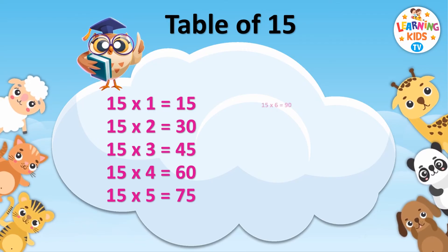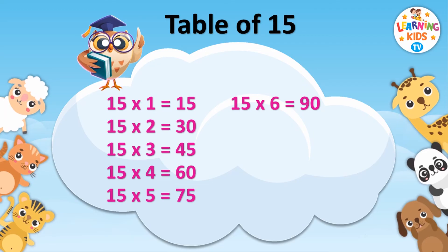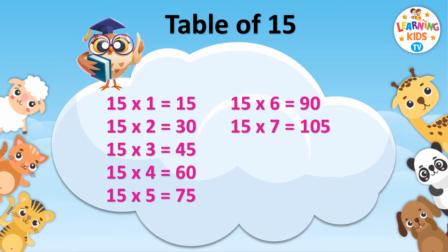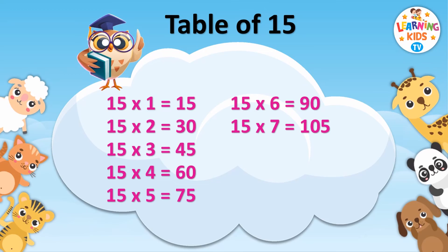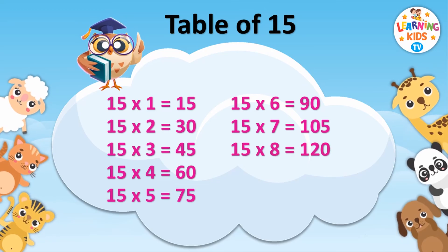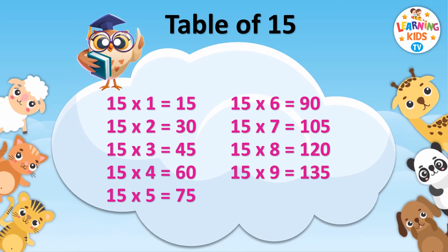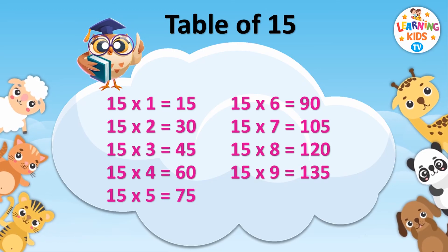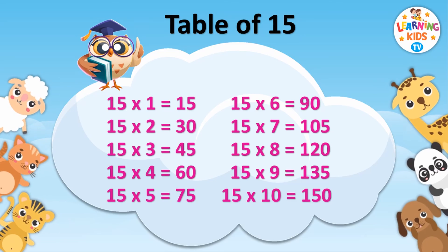Fifteen sixes are ninety. Fifteen sevens are one hundred and five. Fifteen eights are one twenty. Fifteen nines are one thirty-five. Fifteen tens are one fifty.